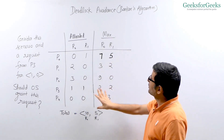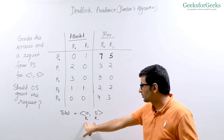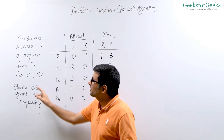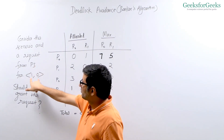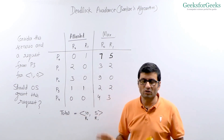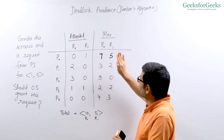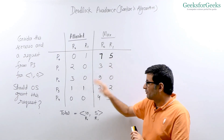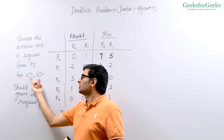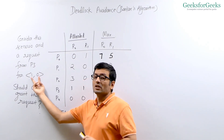So we have the maximum need of every process, we have the allocation, and we know the total instances of every resource — ten instances of R0 and five instances of R1. Now say that P3 requests for one instance of R0 and zero instances of R1. Should the operating system grant this request or not? That's the problem we are trying to solve. The operating system needs to run some algorithm to decide whether it should grant this request or ask the process to wait.